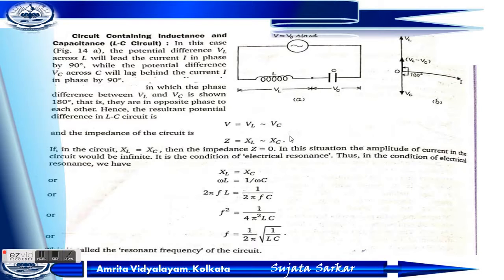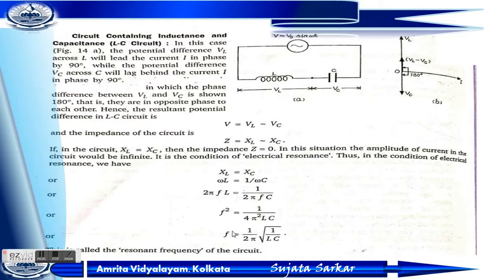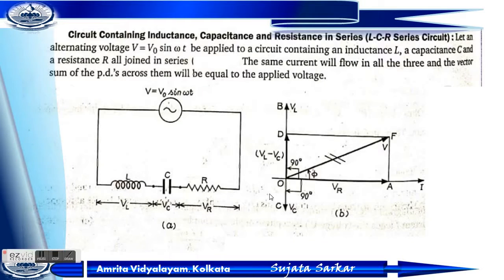This condition — XL equals XC — is called electrical resonance. At resonance, the amplitude of the current in the circuit would be infinite. Since XL equals omega L and XC equals 1 by omega C, and omega equals 2 pi F, we get the resonant frequency: F equals 1 by 2 pi root over LC. This is called the resonance frequency of the circuit.